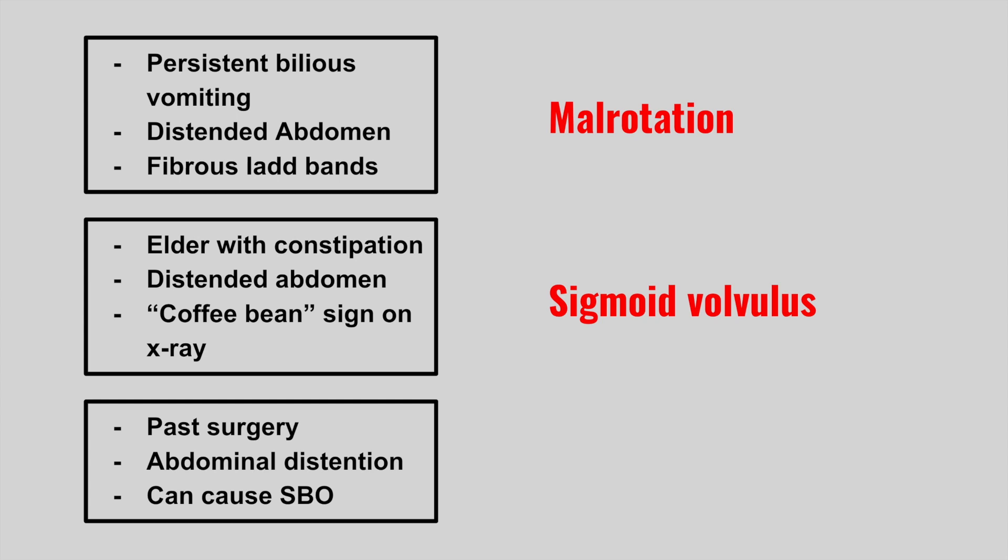The next patient has a history of surgery and now presents with abdominal distension and small bowel obstruction — this is an adhesion. Surgery can predispose you to these adhesions, which can lead to a small bowel obstruction. On x-ray, you can see a step-ladder appearance, which is indicative of a small bowel obstruction.